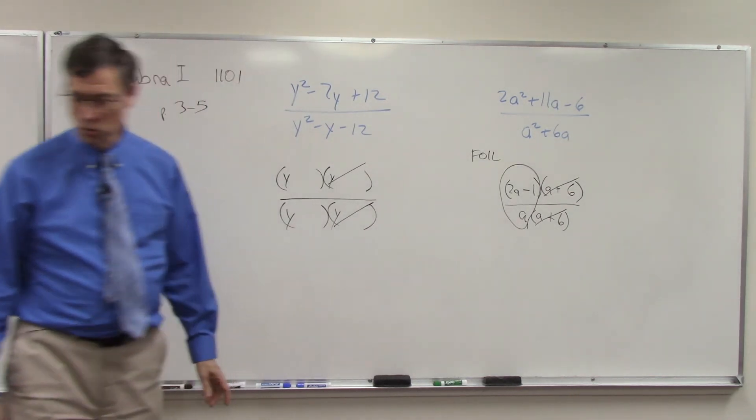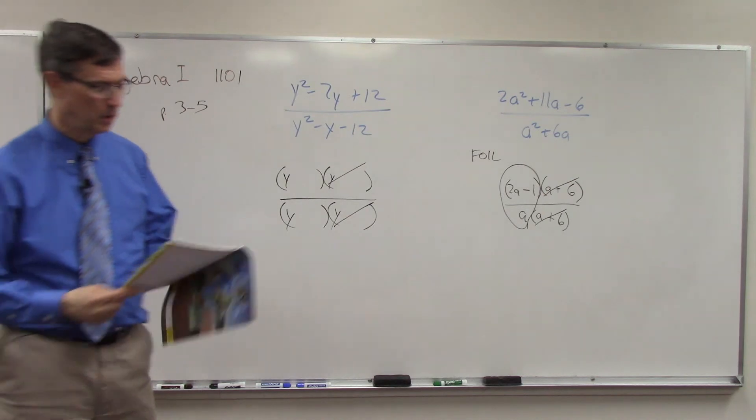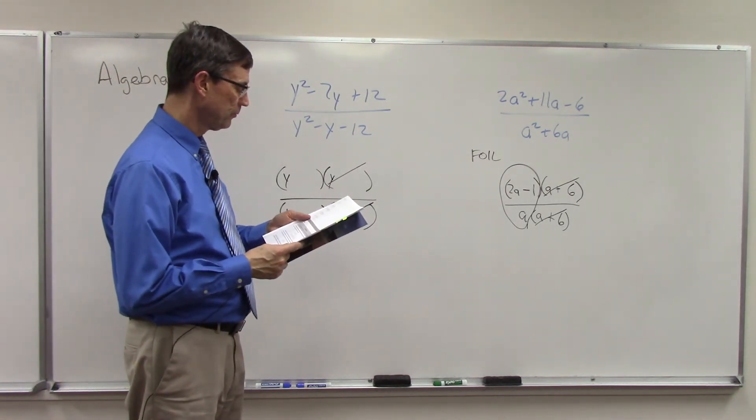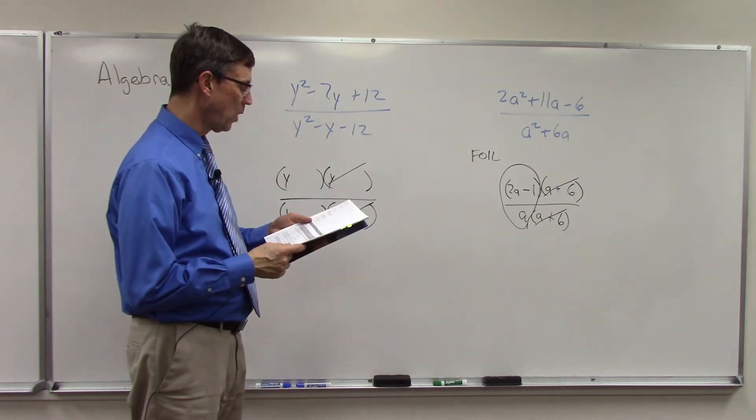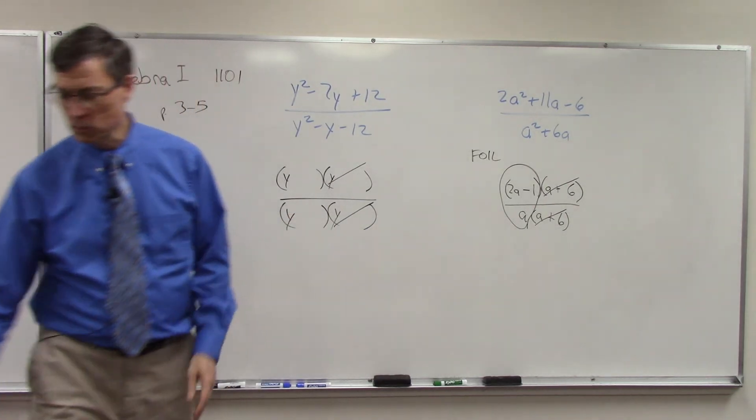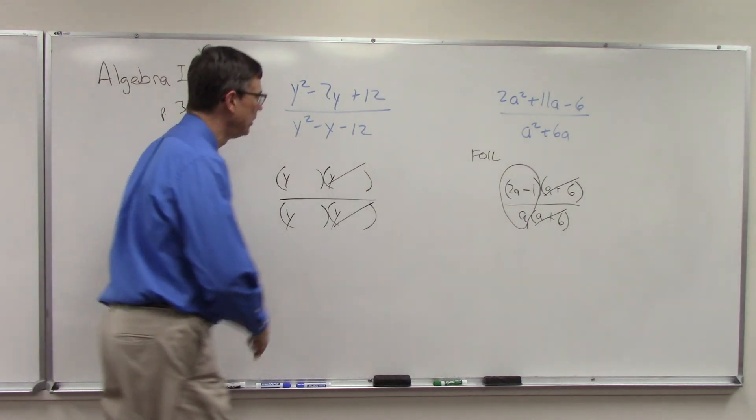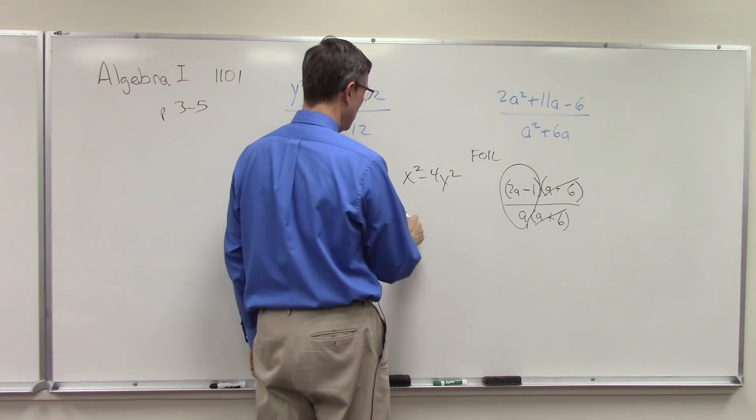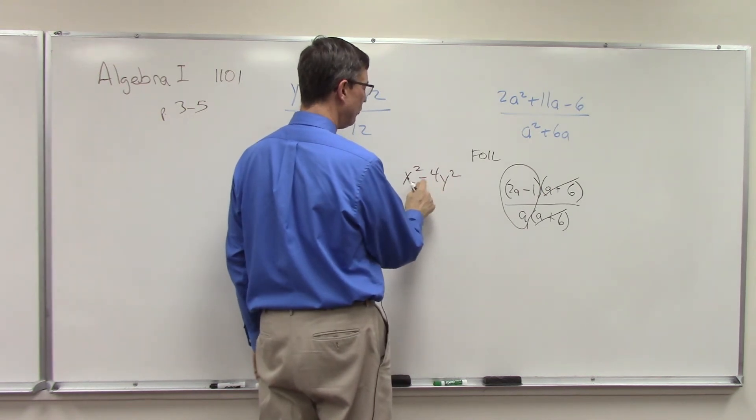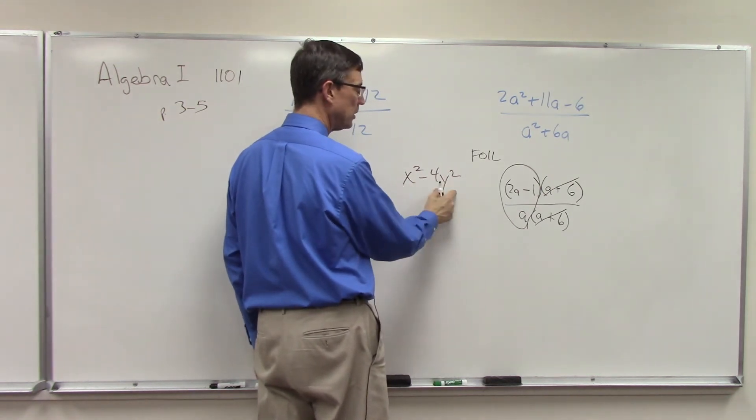So hopefully that kind of helps. You get a lot of practice here. And then, I'm looking at number 12, don't forget that x squared minus 4y squared—do you remember when we have the difference of two perfect squares?